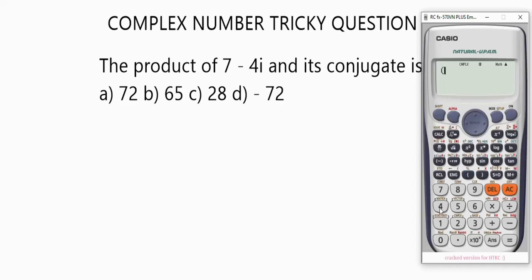We have in brackets, 7 minus 4i. Press this i button. Close the brackets. Open another bracket. You can choose to add the multiplication sign here or not, but let's add it.